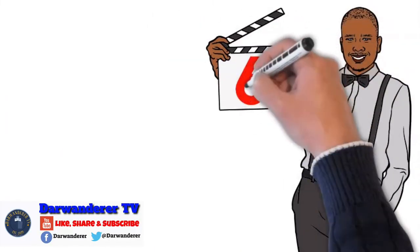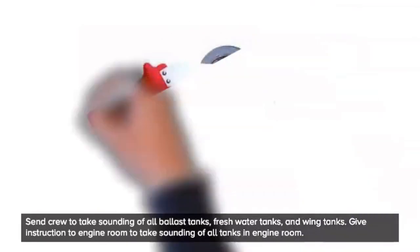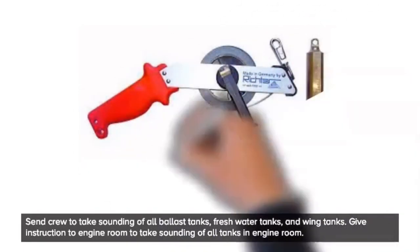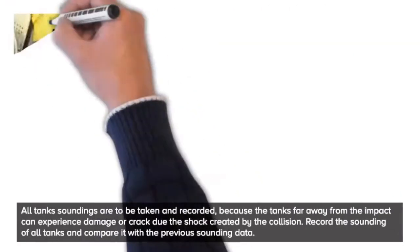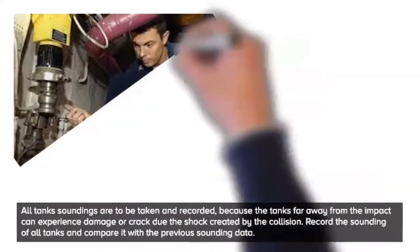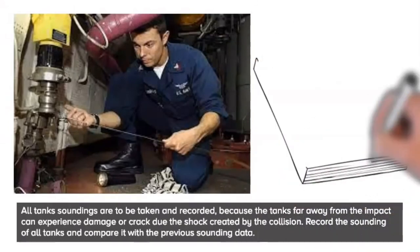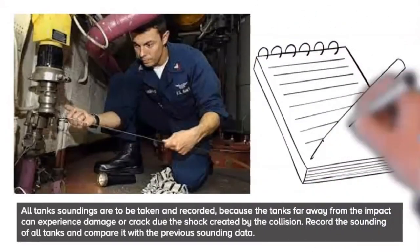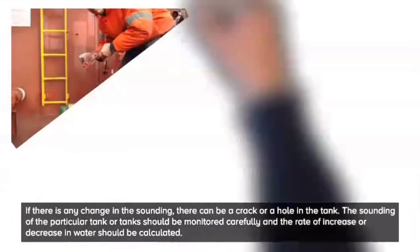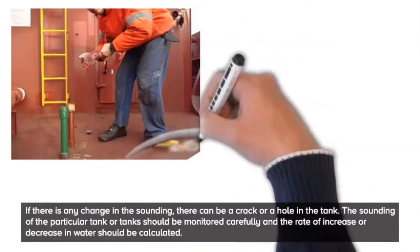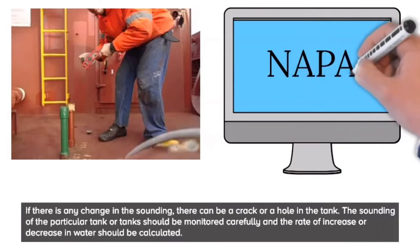6. Take the soundings. Send crew to take sounding of all ballast tanks, fresh water tanks, and wing tanks. Give instruction to engine room to take sounding of all tanks in engine room. All tanks soundings are to be taken and recorded, because the tanks far away from the impact can experience damage or crack due the shock created by the collision. Record the sounding of all tanks and compare it with the previous sounding data. If there is any change in the sounding, there can be a crack or a hole in the tank. The sounding of the particular tank or tanks should be monitored carefully and the rate of increase or decrease in water should be calculated.